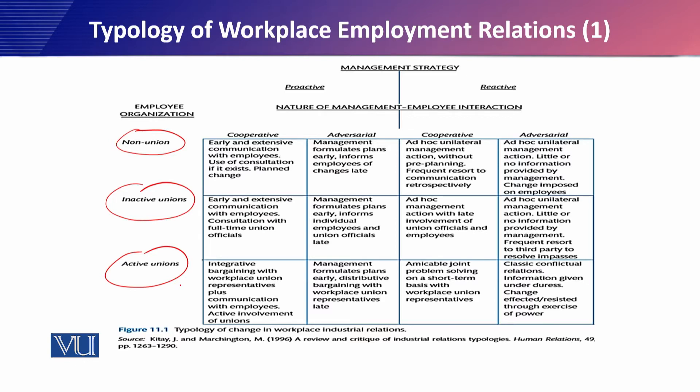The inactive union is another choice — the union exists but it is inactive. And the active union is the third choice. So non-union, inactive union, and active union are the three choices on the horizontal axis.